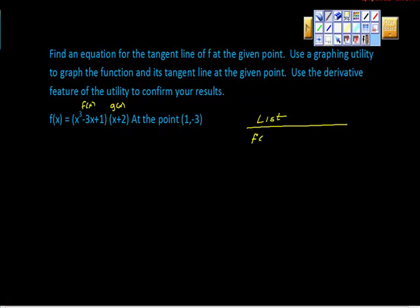Our list is that f of x is equal to x cubed minus 3x plus 1. And what's the first derivative of this f function? 3x squared minus 3. Then here's g of x. g of x is equal to x plus 2. So what's the first derivative of that? It's just 1.